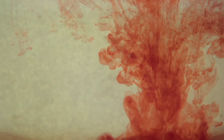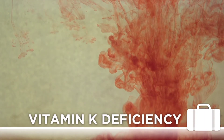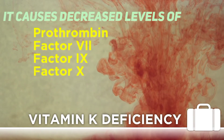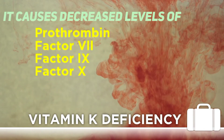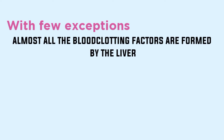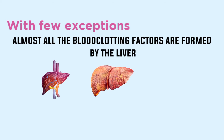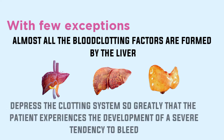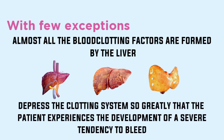Starting with the first — vitamin K deficiency. It causes decreased levels of prothrombin, factor 7, factor 9, and factor 10. With few exceptions, almost all the blood clotting factors are formed by the liver. Therefore, diseases of the liver such as hepatitis, cirrhosis, and acute yellow atrophy can sometimes depress the clotting system.